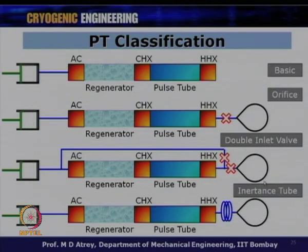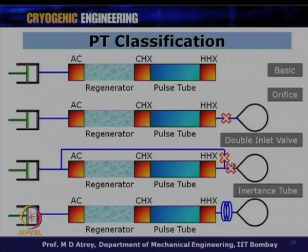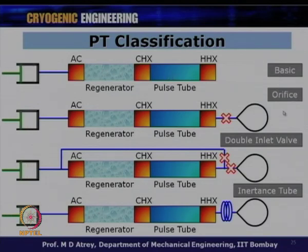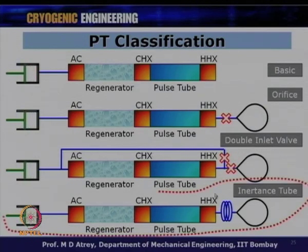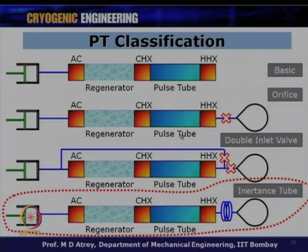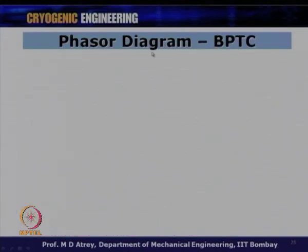These are the four classifications based on phase shift mechanism. In BPTC there is no mechanism; in OPTC there is an orifice plus reservoir; in DIPTC there are two orifices (double inlet); in ITPC there is an inertance tube leading to a reservoir. Now let us draw phasor diagrams for BPTC, OPTC, and double inlet PTC, to understand how each mechanism affects the phase angle θ and cooling effect.